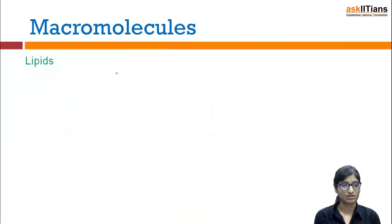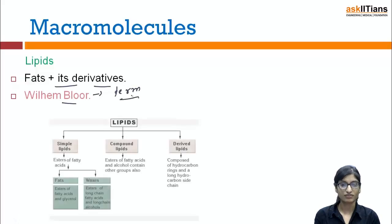Lipids first. Lipids are made up of fats and its derivatives. I have already explained fatty acids in the micromolecule part. Fatty acids plus something else makes lipids, which can be some derivative. William Bloor is the person who first used the lipid term.